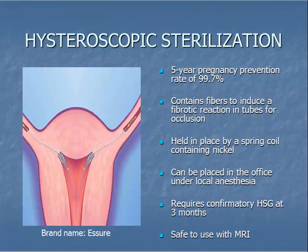Another method of female sterilization that occludes the fallopian tubes can be performed hysteroscopically. Hysteroscopic sterilization is performed using a camera with an operating port placed through the vaginal and cervical openings into the uterus, which eliminates the need for a skin incision. This procedure involves placement of metal springs into the fallopian tubes through the hysteroscope. Tubal tissue grows into the springs over several months and completely blocks the tubes. Three months after the procedure, the patient undergoes an x-ray dye study of the uterus and tubes to ensure the tubes are blocked. One benefit of this procedure is that it can be performed in the office under local anesthesia.